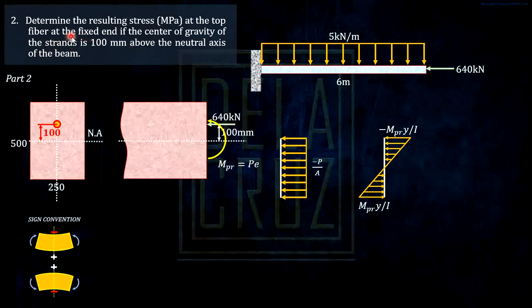We are to solve the stress at the top fiber. The stress at the top fiber is just negative P over area: 640,000 newtons divided by the area, 250 times 500, a rectangular section. Plus the negative MY over I. Take note, the moment is P times E: 640,000 times 100, the eccentricity. Y is the distance from the neutral axis to the desired point, the top fiber, that is just half of 500. Divided by the inertia of a rectangle, BD cubed over 12.